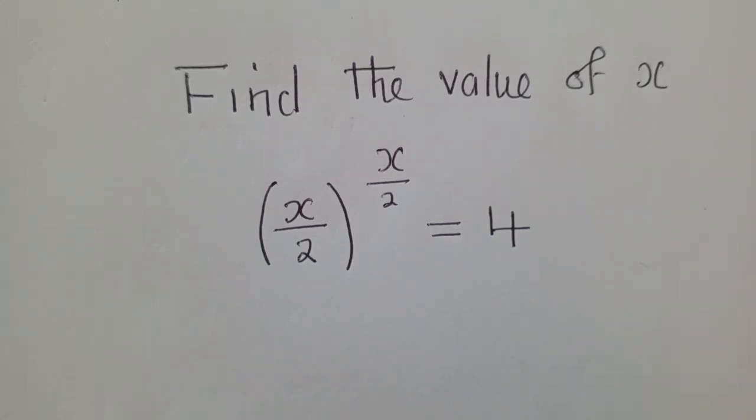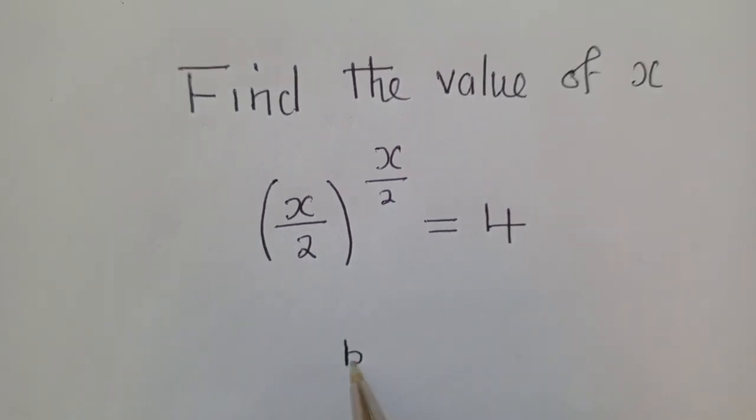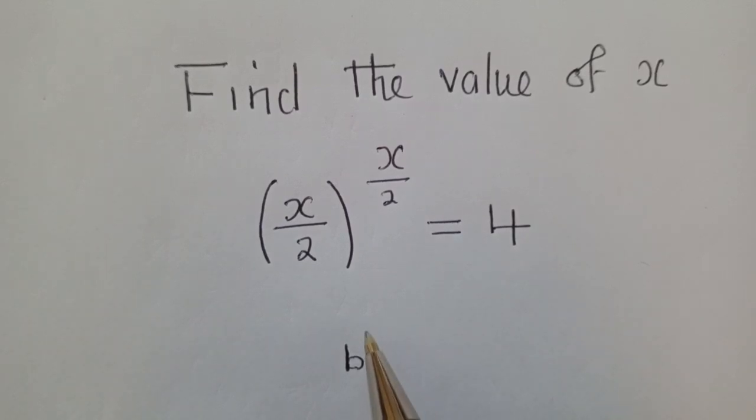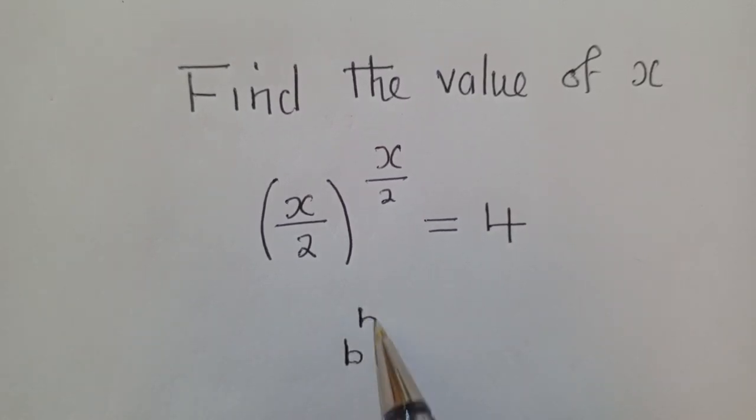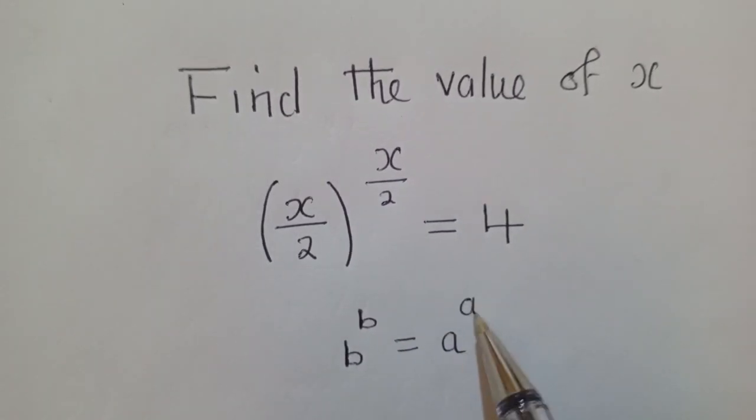So the law that we need to put into consideration looks like this. When you've got a base, so this is a base, let's say you've got b, and also a power here, which is b. This will be equal to power a.